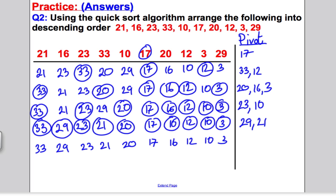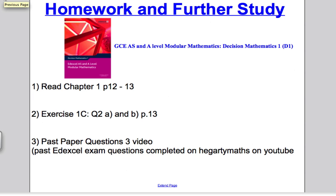And that's everything there is to know about the quicksort algorithm. And just to finish off, here is homework and further study. Please look in your decision one Edexcel book, and read chapter one, pages 12 and 13, just to recap everything that's come up in this video. Then do exercise 1C, question 2A and B on page 13. That will just refresh and be two more examples for you to do. After that, make sure you go on to my past paper question 3 video, where I answer all the questions that have come up on the quicksort algorithm in the past papers. So you can work through those to check your understanding at an exam standard. Thank you for watching the video, and I hope you found it useful in your D1 study.